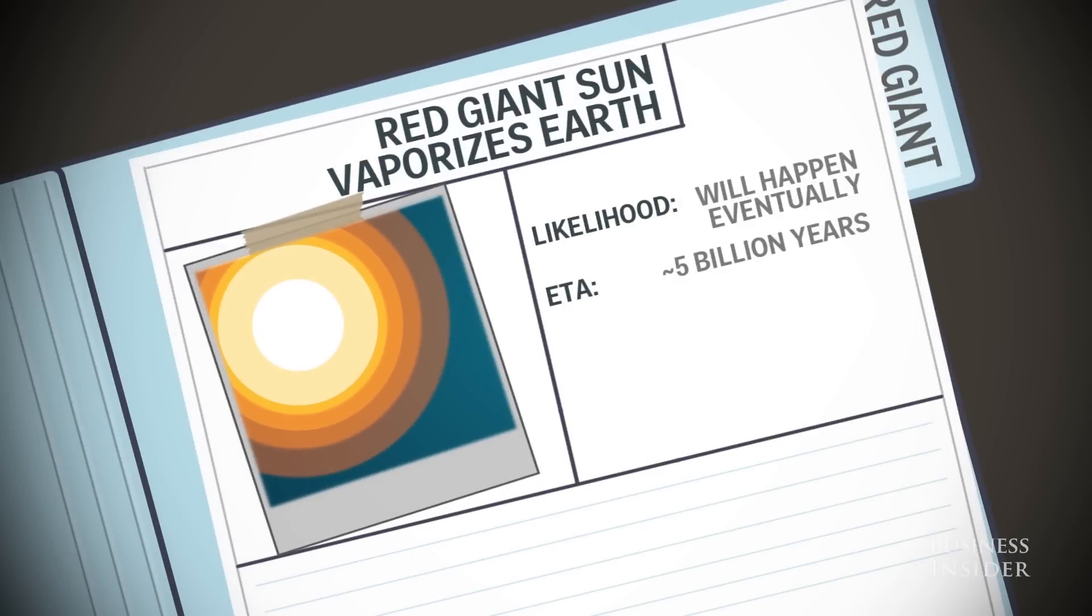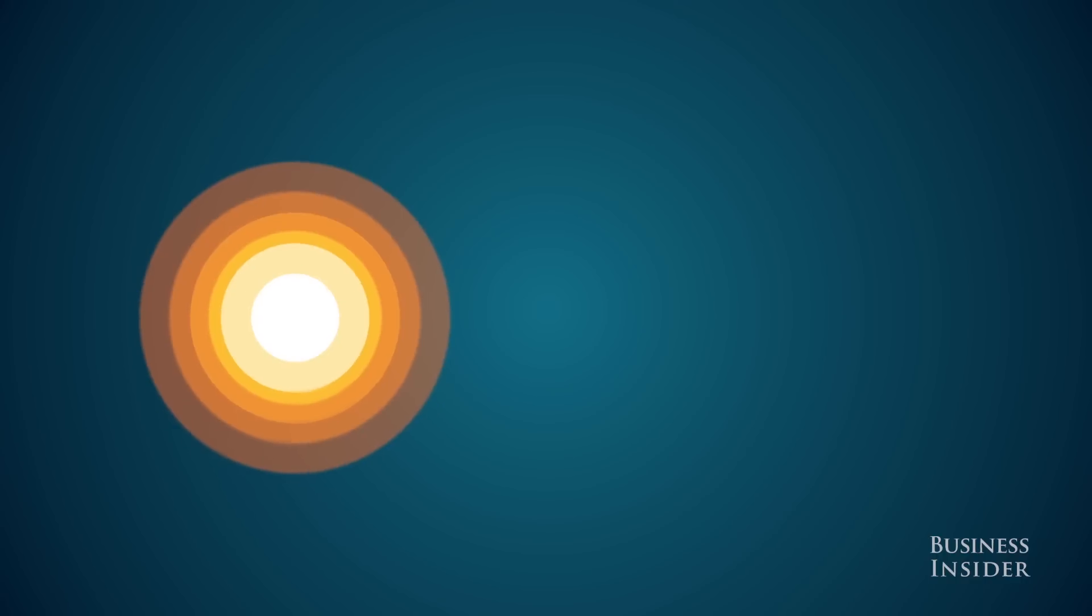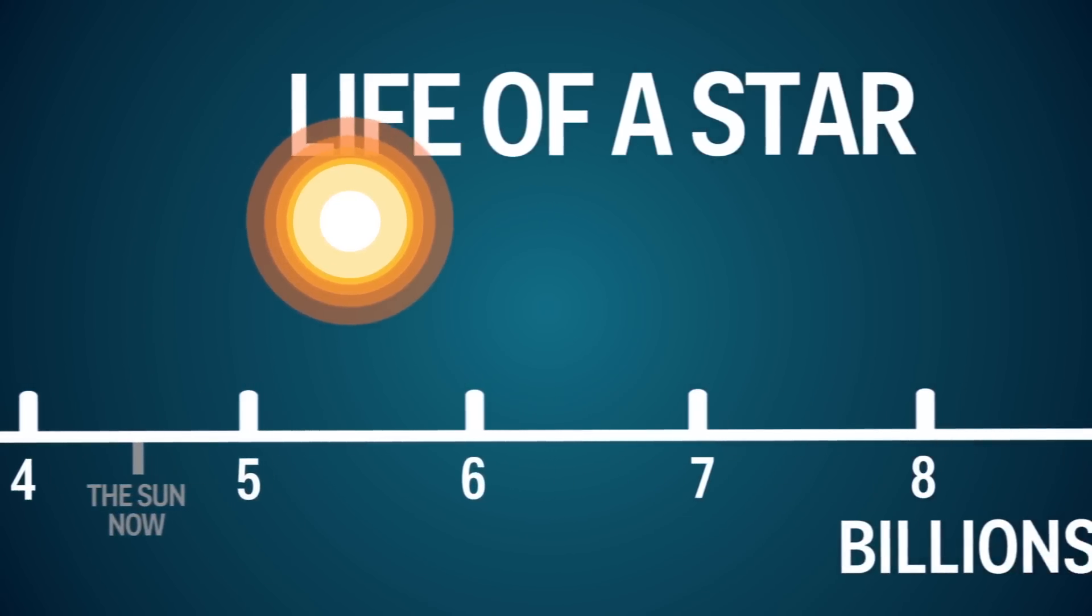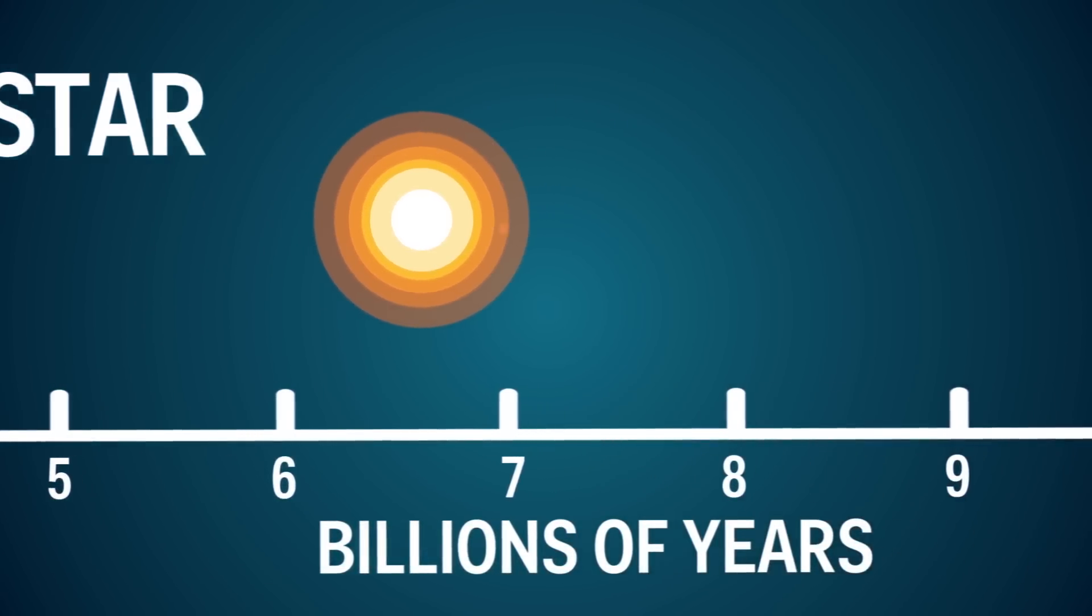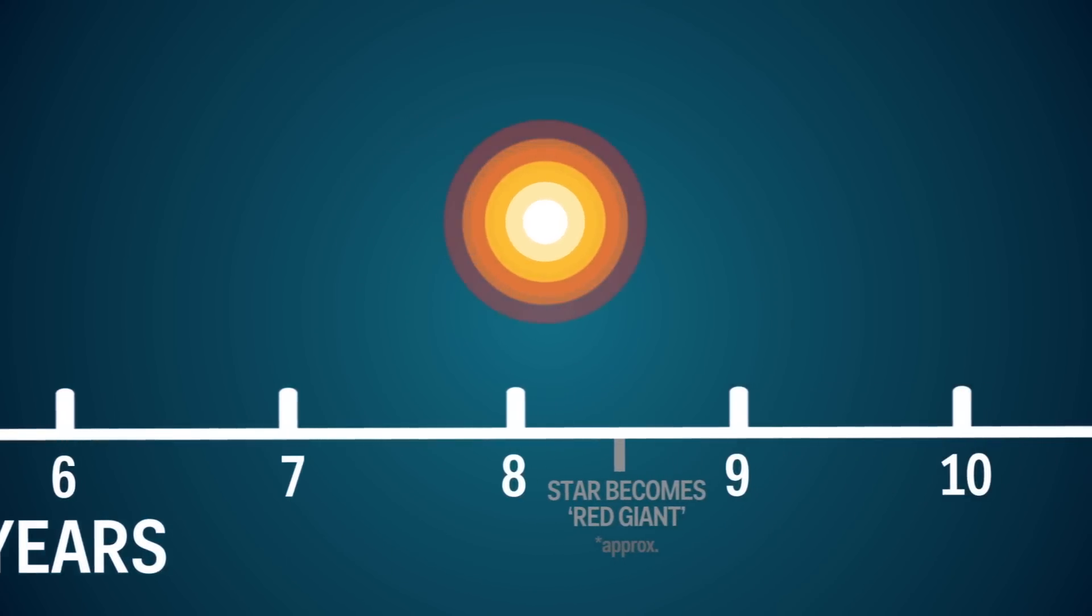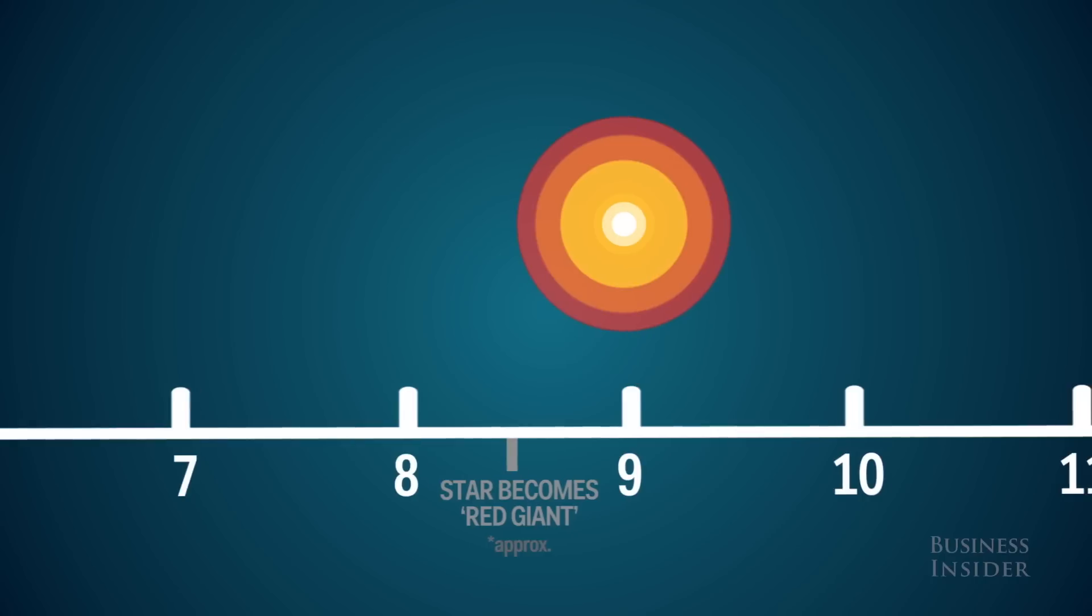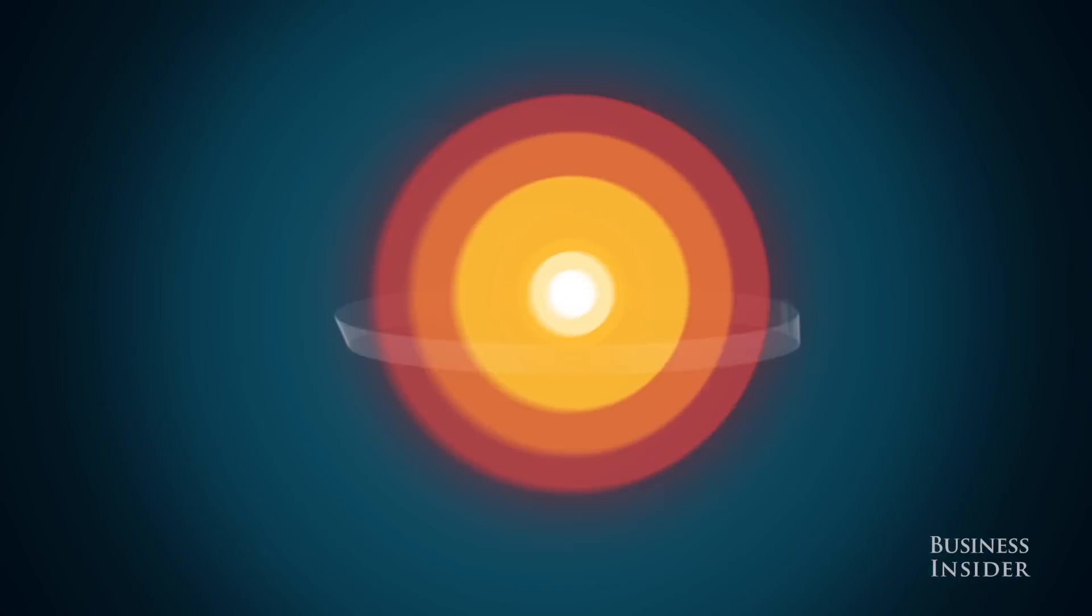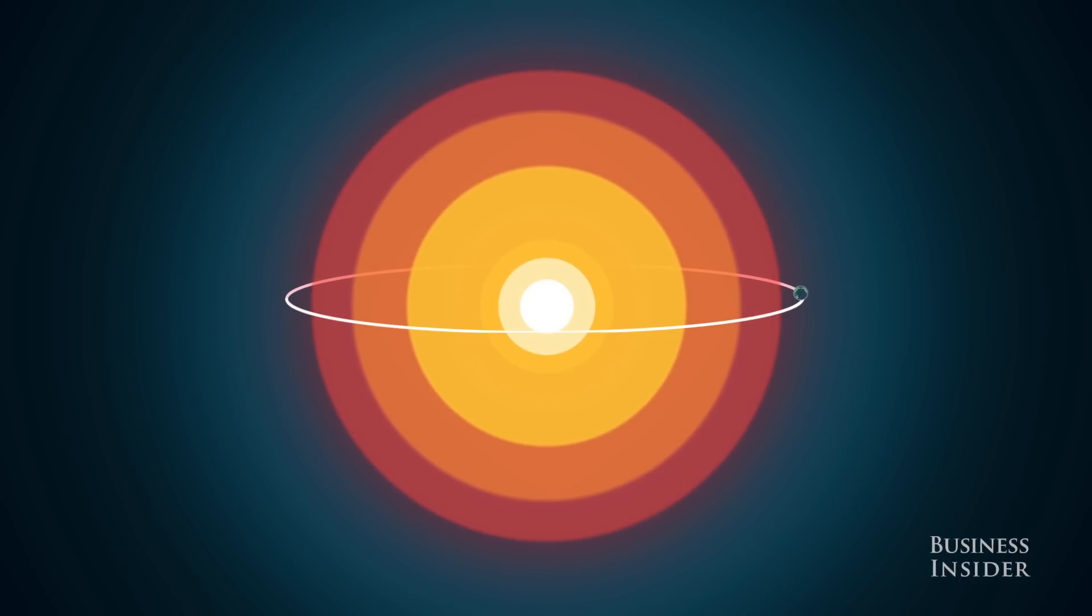Every star goes through life phases. Our Sun is currently in the most stable part of its life and will remain there for at least another few billion years. But after several billion years of life, average-sized stars run out of hydrogen in their core, leaving only helium. This causes the center of the star to compress, which in turn allows the outer edge of the star to expand. Ultimately, the Sun will grow past the Earth's orbit, engulfing our planet.